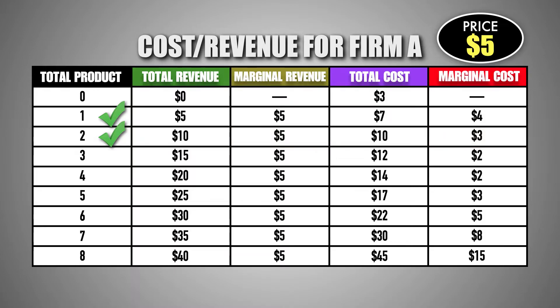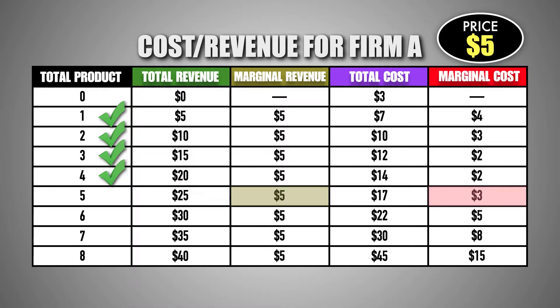When selling the third and fourth units of good M, the marginal revenue gained by the firm is $5, while the marginal cost of producing each unit is only $2. Again, because these units have a marginal revenue that is greater than their marginal cost, it's profitable for the firm to produce them. The fifth unit of good M brings the firm a marginal revenue of $5, while the marginal cost of producing the unit is $3. With a marginal revenue that is greater than marginal cost, the firm will decide to produce the fifth unit as well.